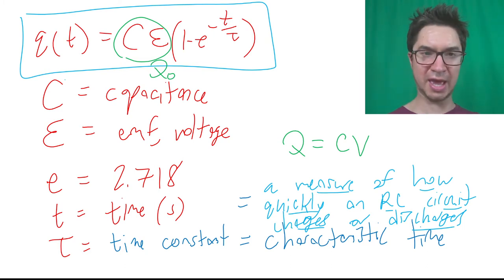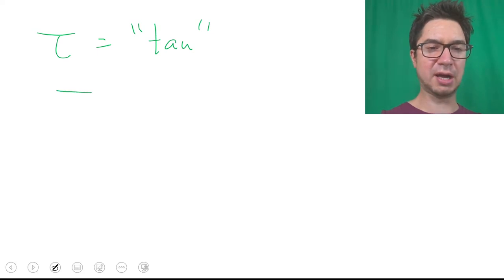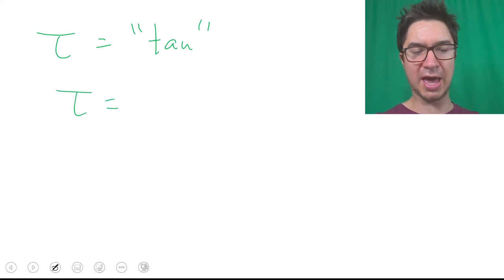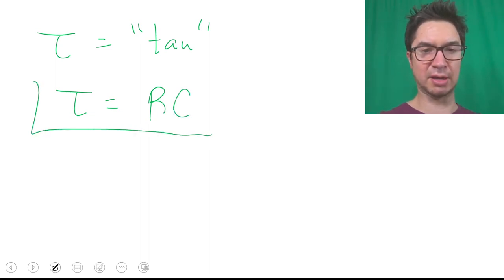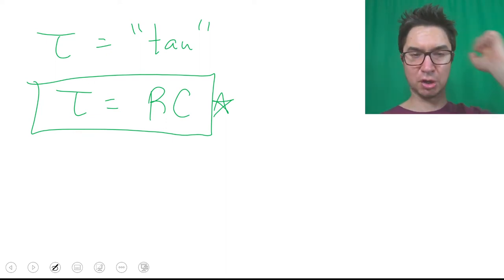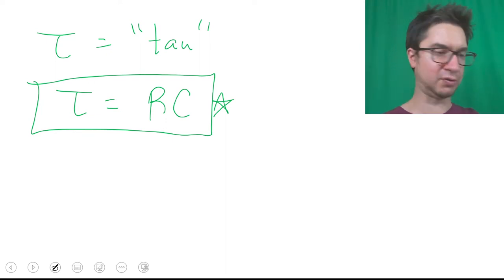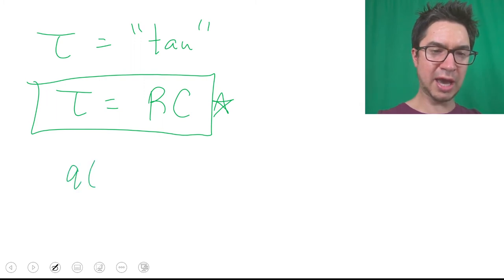Let's look at how we calculate the time constant tau — pronounced 'tau.' The time constant is calculated as the product of the resistance and the capacitance: τ = R·C. To find the time constant, all you have to do is take R times C, the product of resistance times capacitance.